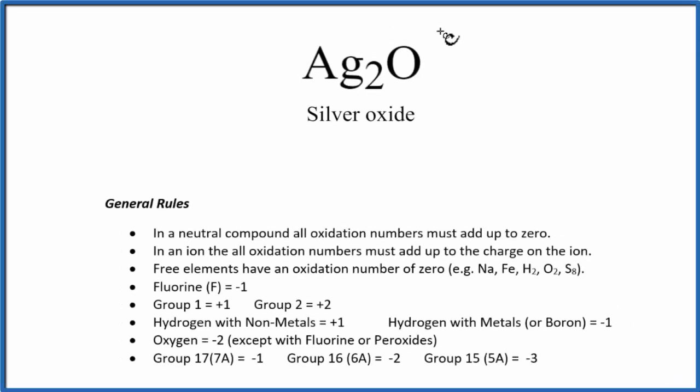To find the oxidation numbers for each of the elements in Ag2O, that's silver oxide, sometimes called silver one oxide, we'll use these rules here.